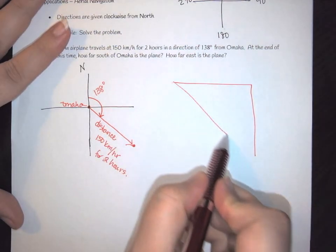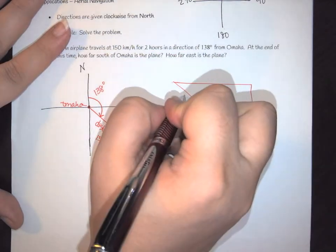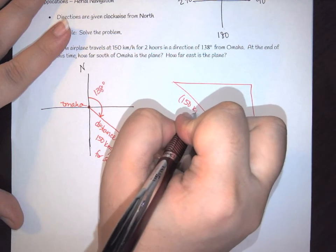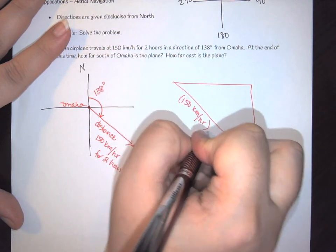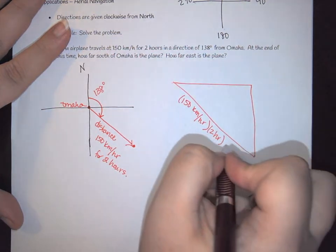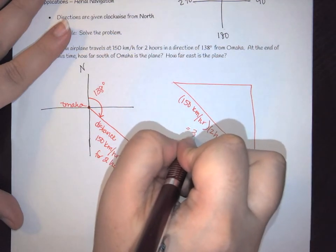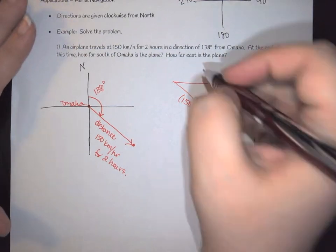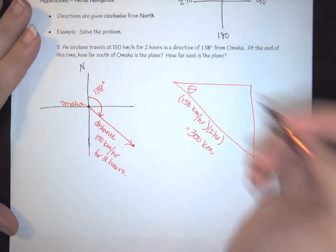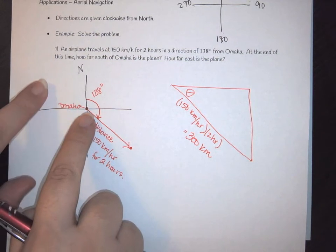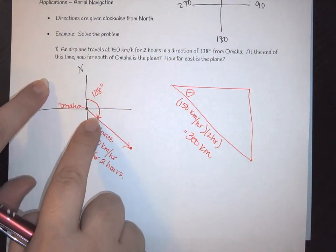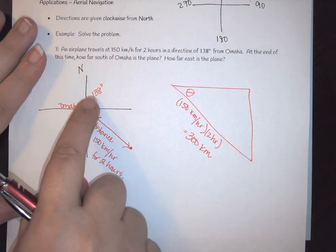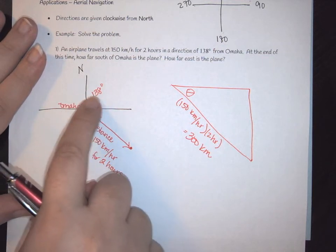So what we actually have is a triangle here, so we can blow it up a little bit so we can see it. And we've got that this distance here is going to be 150 kilometers per hour times two hours, which gives us a total of 300 kilometers. So that's how much we've gone. Now we need to figure out what this angle is. So we come back to what we did. We know the big angle here is 138, we also know that this piece here was 90.